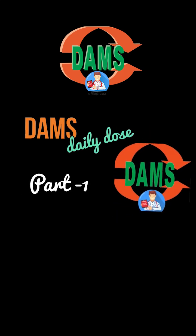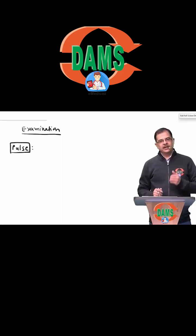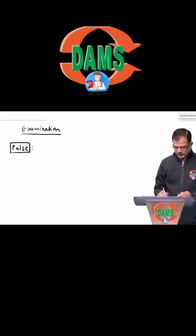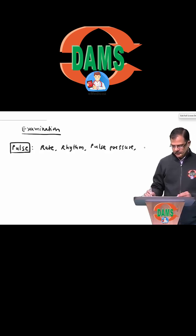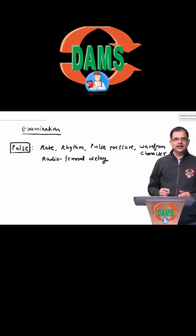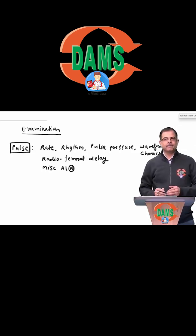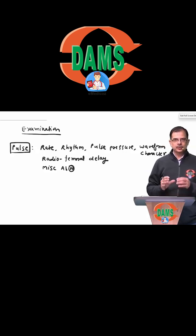Pulse is described under the headings of rate, rhythm, pulse pressure, waveforms or character, radio-femoral delay, and some miscellaneous abnormalities. Starting with the pulse rate, we will first discuss what is normal and then what is the abnormality.